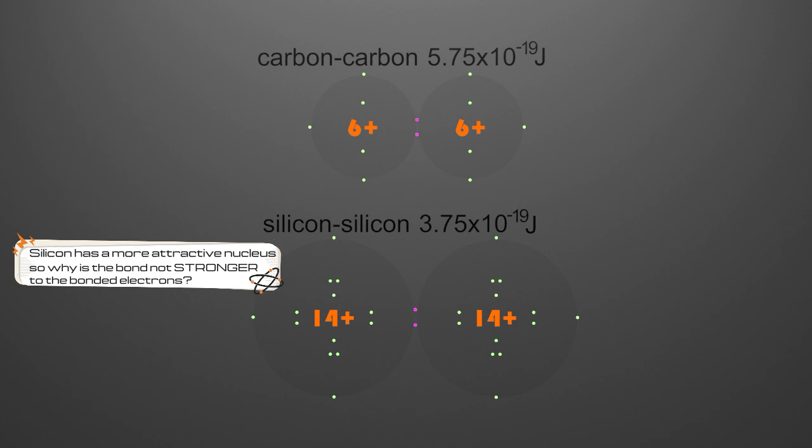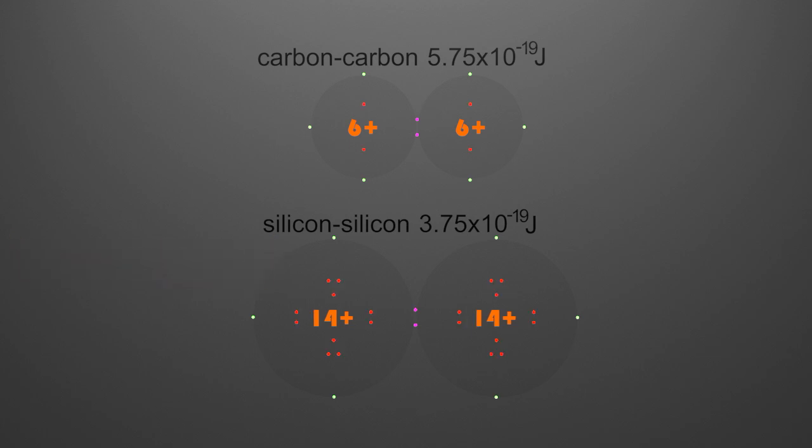And the reason is shielding. Those flashing red electrons there are called shielding electrons. And so those 10 electrons in silicon negate 10 of the positive charges on the silicon nucleus, effectively leaving it to be only a plus four nuclear charge.